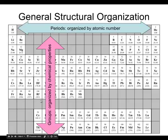The columns on a periodic table we call groups or families. Everything in a column — a group or a family — has similar chemical properties.